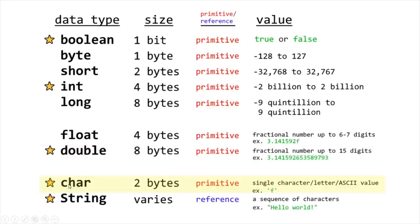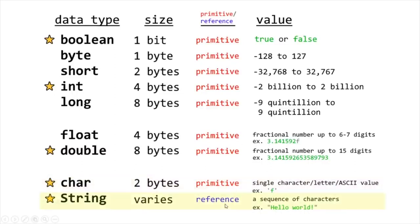Now let's move on to characters — pronounced char for short. Think of Charizard. This uses two bytes of memory and stores a single character letter or ASCII value. A common convention when assigning values to a char variable is that you need to surround the value with a pair of single quotes. Our last data type is the string data type — these are reference data types and store a sequence of characters, like a word or a sentence.